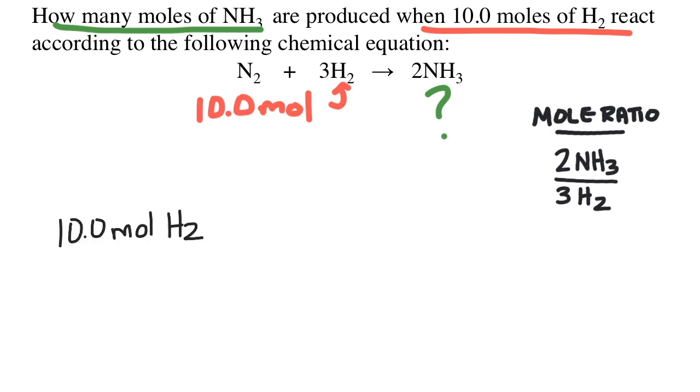So to solve this problem, all we have to do is take the given value, 10 moles of hydrogen, and multiply by the mole ratio. When writing the ratio, we just need to make sure that we put the thing we want to know about on the top and the given thing on the bottom.